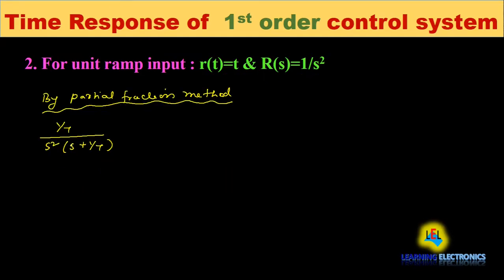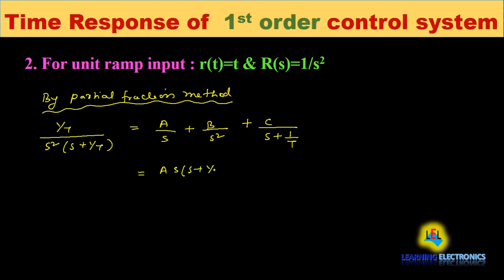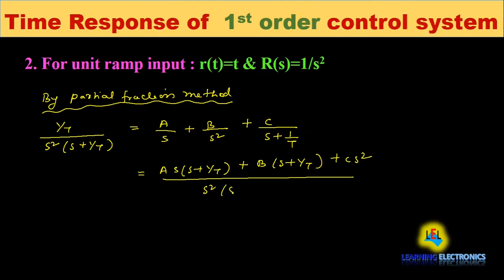Now we apply the partial fraction method to this equation. By partial fractions, this equals A/s + B/s² + C/(s + 1/T). Taking the LCM, the numerator becomes A·s·(s + 1/T) + B·(s + 1/T) + C·s², all divided by s²·(s + 1/T), which equals (1/T) / [s²·(s + 1/T)].